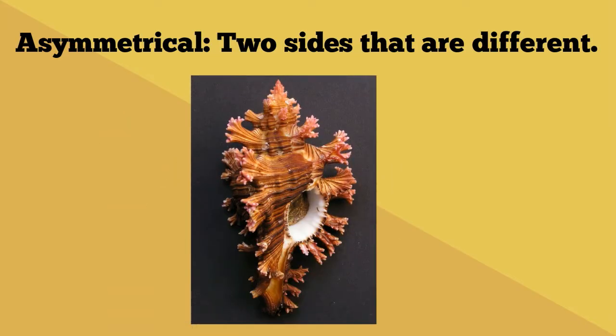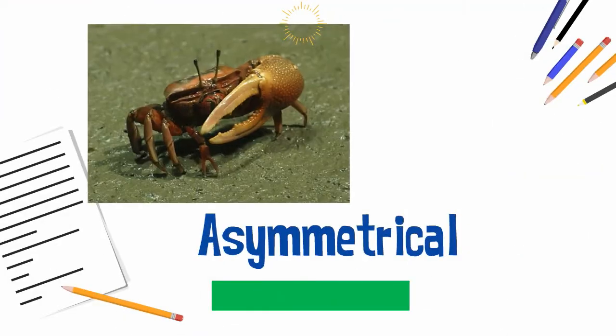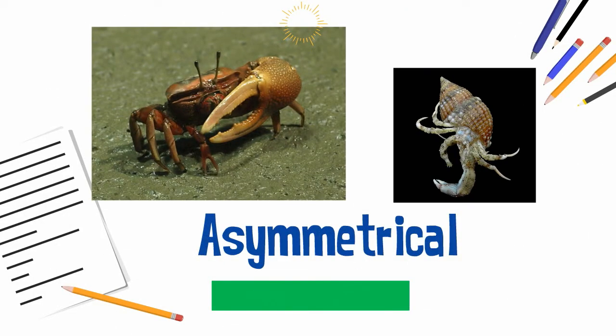Here is a list of a couple of animals that have asymmetrical symmetry. Up first, fiddler crabs and hermit crabs have one claw that is much larger than the other.